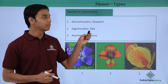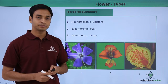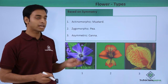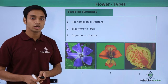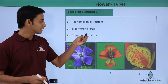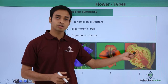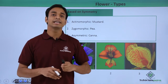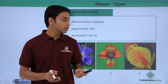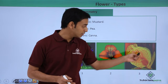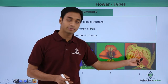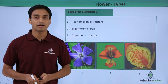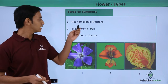If you try passing through the center in any other plane, it won't divide the flower into two equal halves. This is known as zygomorphic — an example is pea. The third type is known as the asymmetric type of flowers; an example is canna. Here the flower cannot be divided into two equal halves in any plane.